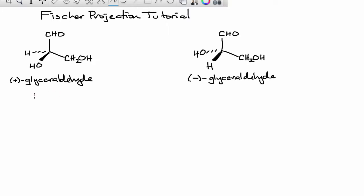These molecules are enantiomers. We have plus glyceraldehyde and minus glyceraldehyde. The plus and the minus, which I've underlined in red, indicate the direction in which these molecules rotate plain polarized light.